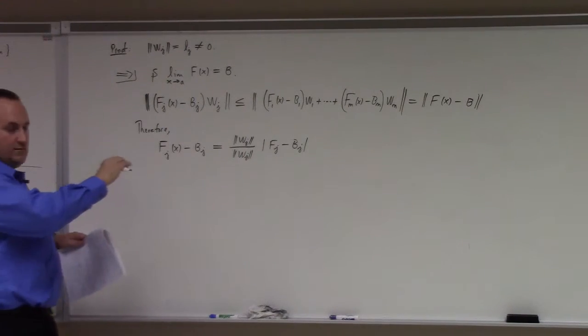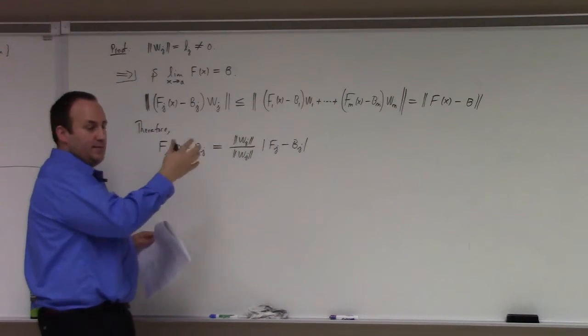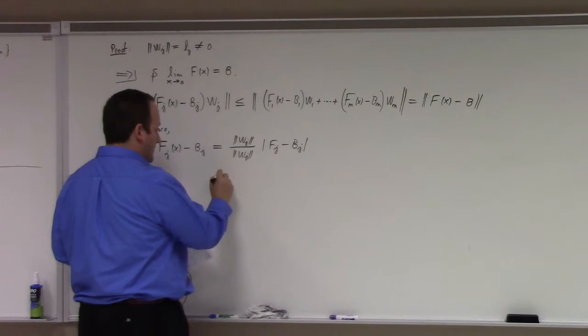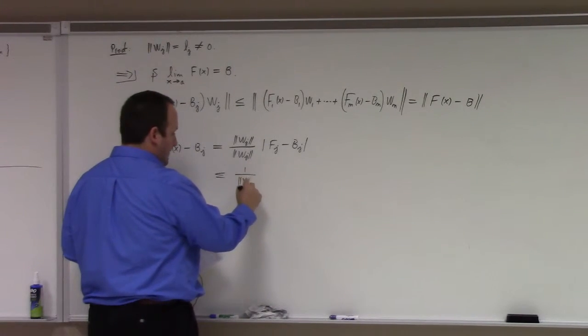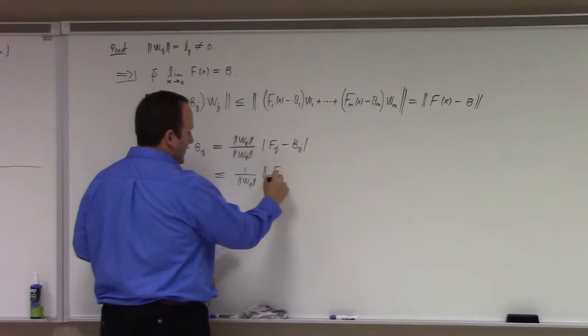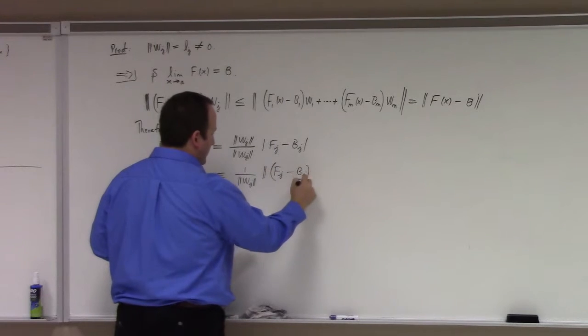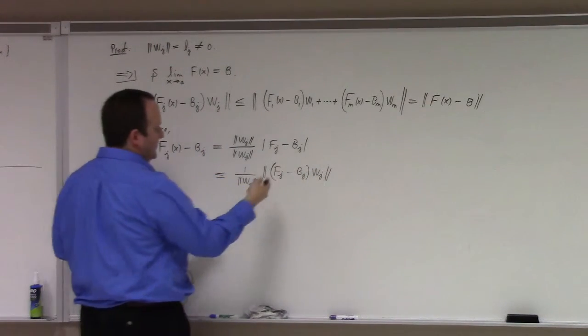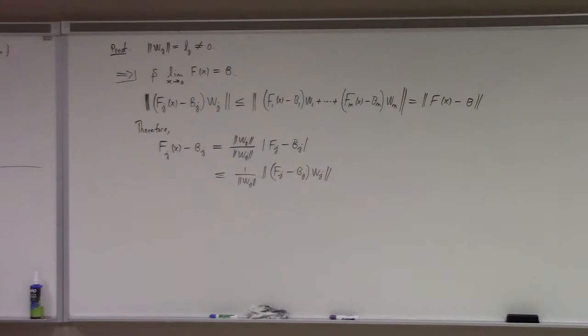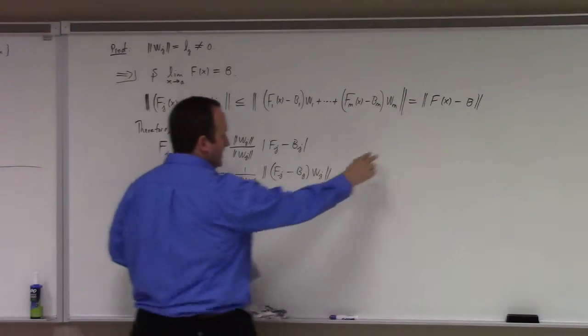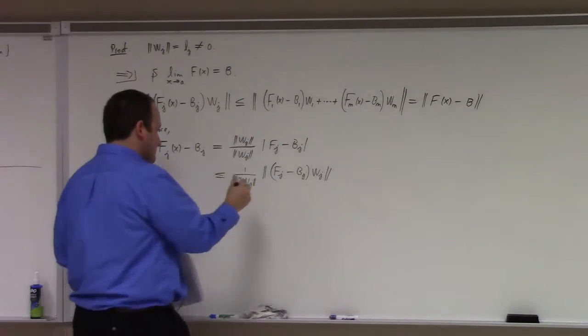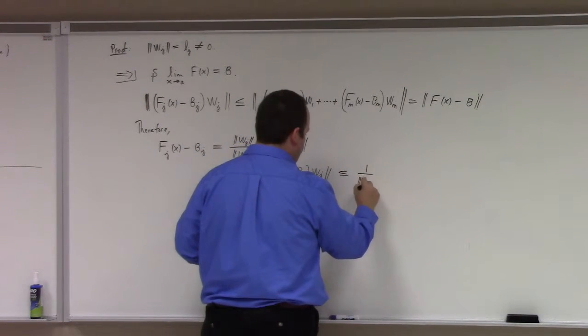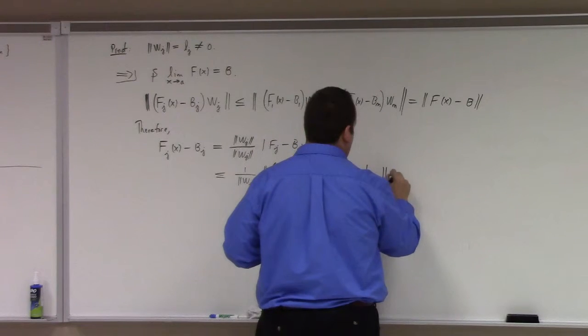And then what I do is I just bring in, using the absolute homogeneity of the norm, I rewrite this as being less than or equal to 1 over the norm of wj, the norm of fj minus bj times wj. Now notice that I've gone from looking at the absolute value of a real value function to the norm of the jth vector component, and then my argument is just basically that that is less than the norm of the whole difference. This is part of this, but it's just one part, so certainly that's less than or equal to 1 over the norm of wj, norm of f of x minus b.